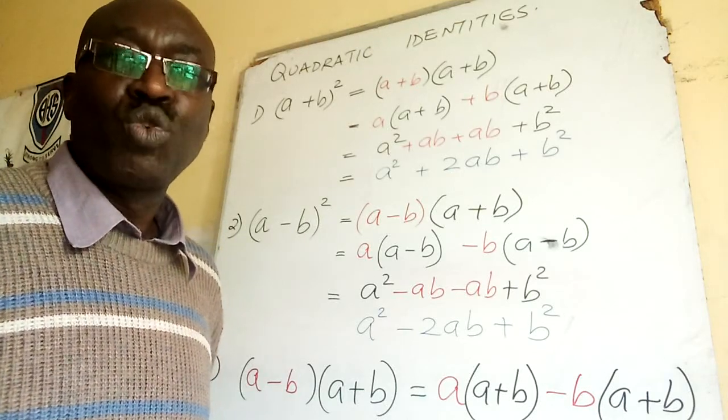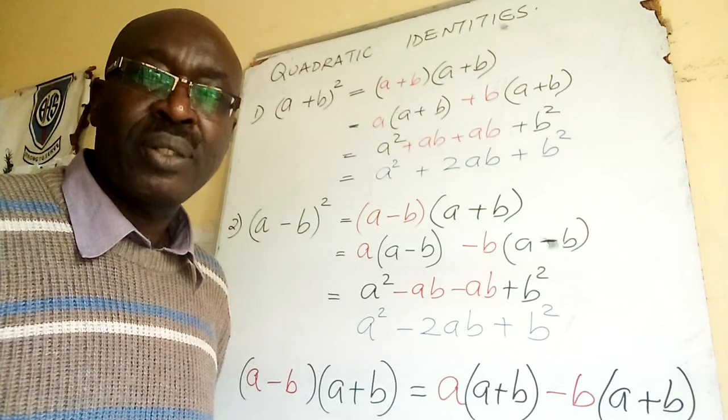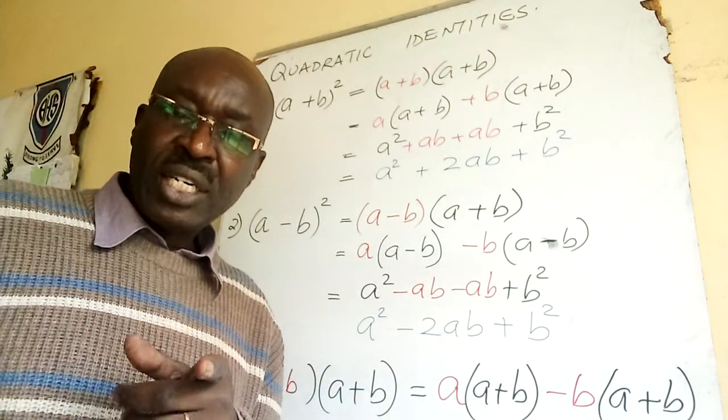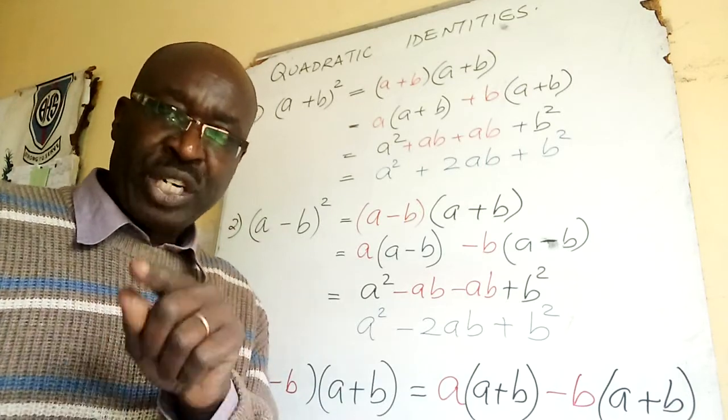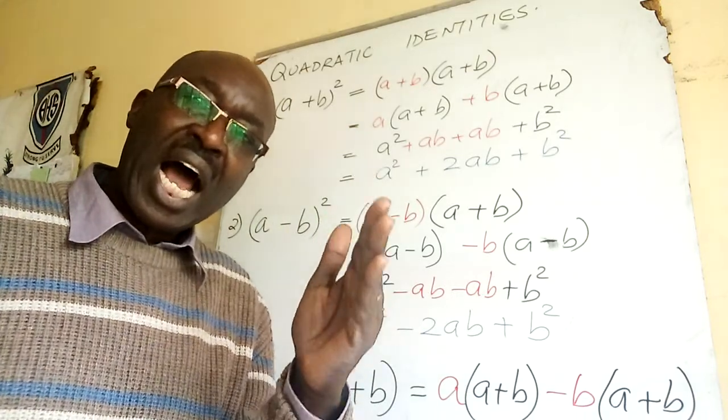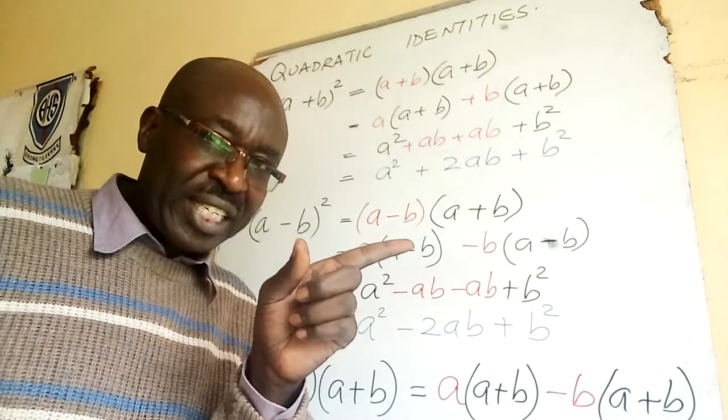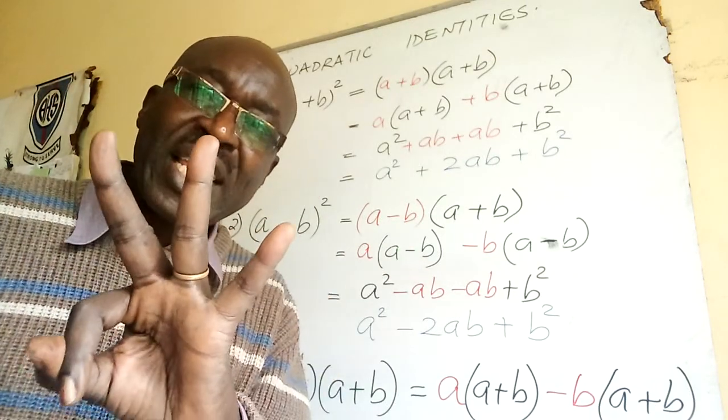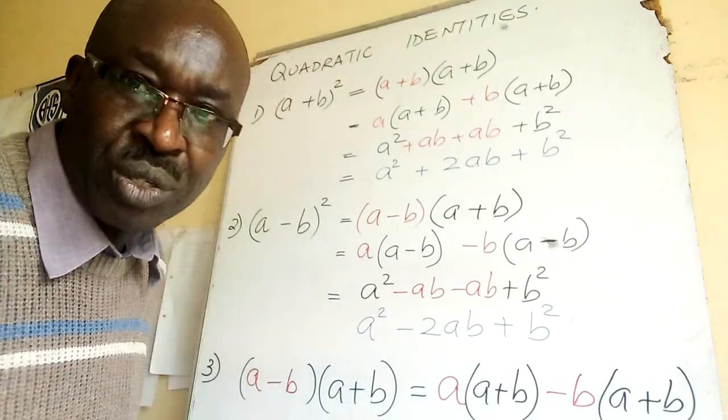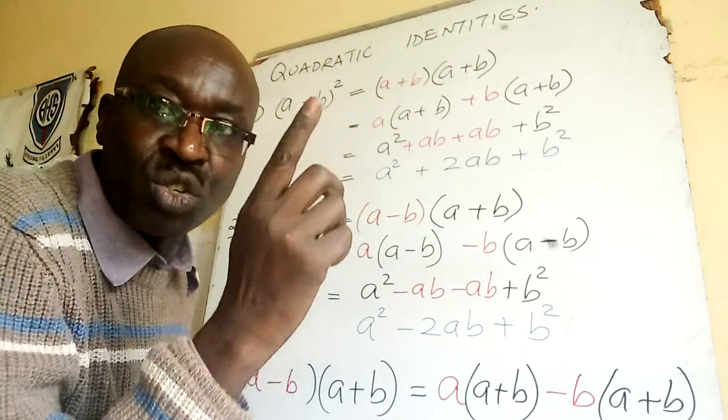Hello again and welcome to another lesson on quadratic identities. The previous lesson we did quadratic expressions, before that we looked at algebraic expressions. Now I'm extending to key expressions, three key expressions. Suppose we are given (a+b) in a bracket squared.